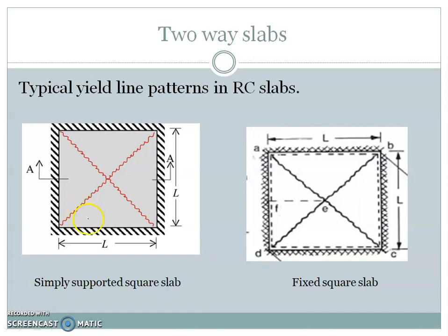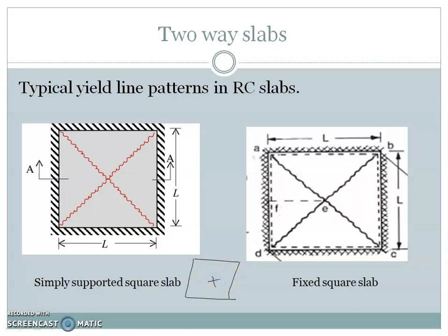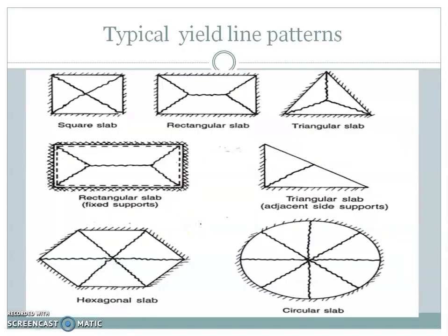For two-way slabs, here is a typical yield line pattern for a two-way square slab. For a simply supported square slab, cracks appear as diagonals. For a fixed square slab, the positive yield lines remain the same as diagonals, but additional negative yield lines form toward the supports. The initiation starts at the center — the weakest point — and then develops in all four directions. These are some typical yield line patterns for different geometrical shapes.